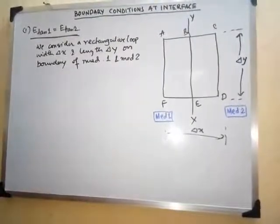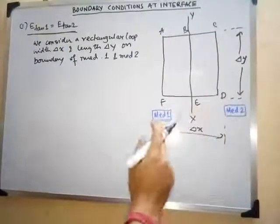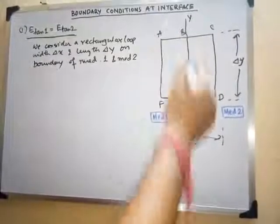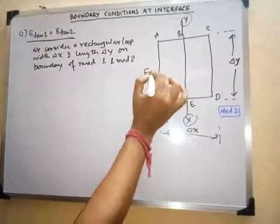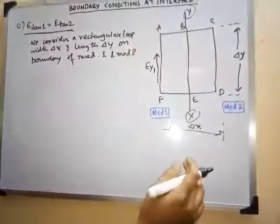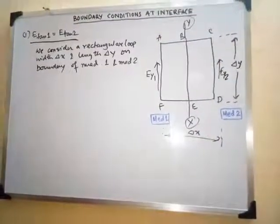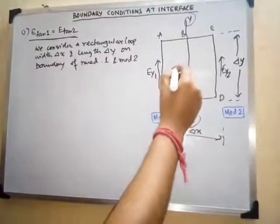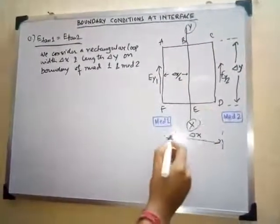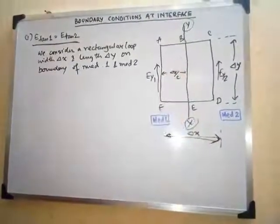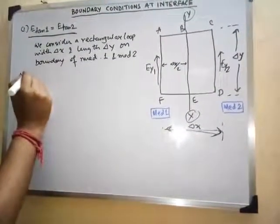Since the total length is del_y, we can define the electric field on this side from A to F as E_y1, in this direction, and E_y2 in the other direction. Also, we can write del_x by 2 for the half part — that is, A to B or F to D — because the total width is del_x, so half of it is del_x by 2.